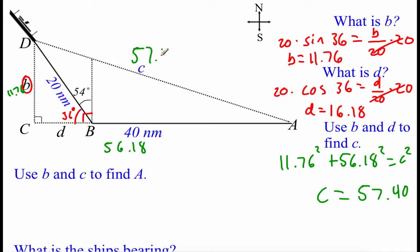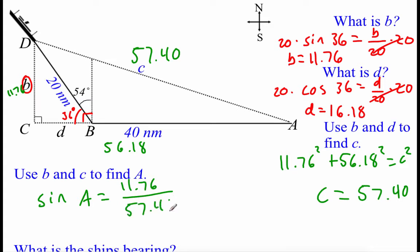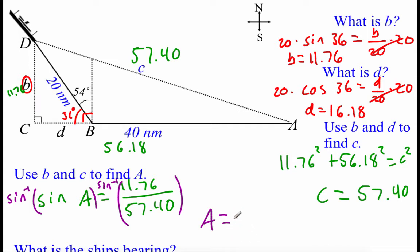The C value is 57.40, and we're going to use our B side and C side to find the measure of angle A. B is opposite and C is the hypotenuse, so sine of angle A equals 11.76 over 57.40. To solve for angle A we take the inverse sine of both sides, and typing this into our calculator gives us angle A of about 11.82 degrees.